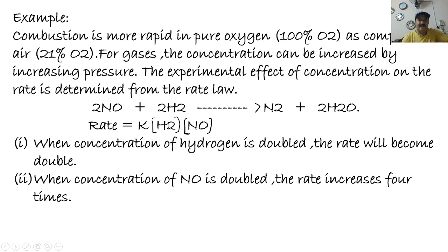The rate equation is: rate = K[H2][NO]². When the concentration of H2 is doubled, the rate doubles. When the concentration of NO is doubled, the rate increases four times — hence the power of NO is 2 and the power of H2 is 1. So the order of reaction is 2 + 1 = 3.